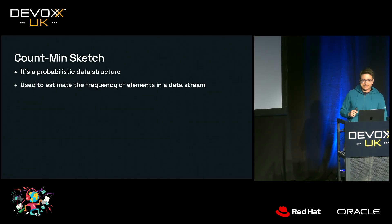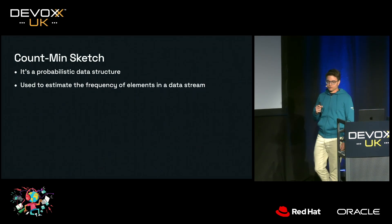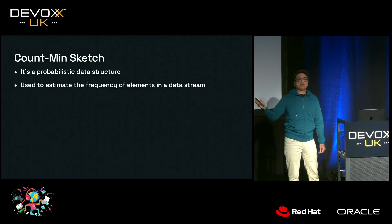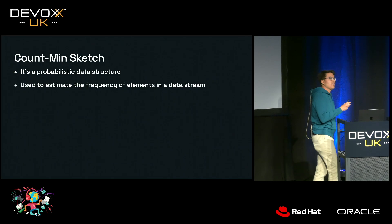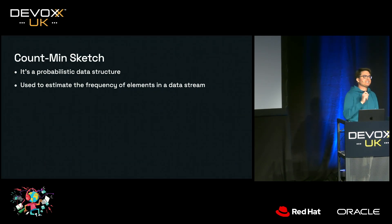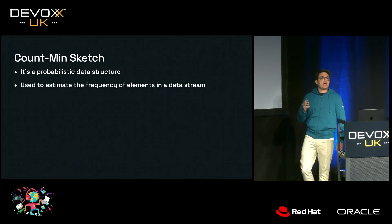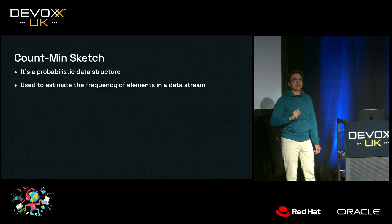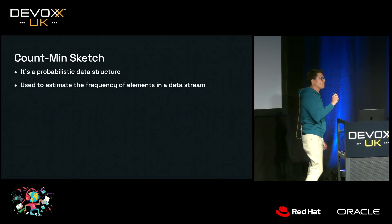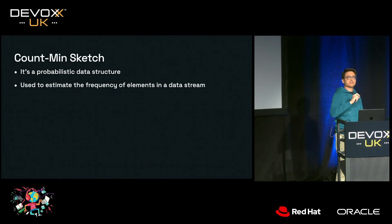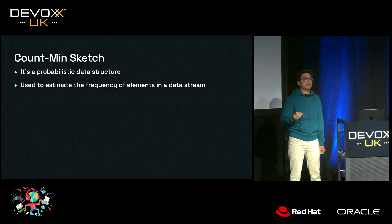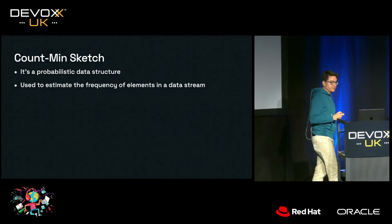That's not the case with probabilistic data structures. With Count-Min Sketch, which is used for estimating the frequency of elements or terms in a data stream, if you ask how many times an element was mentioned in the past minute, it might return that it's probably been mentioned 50 times — but it cannot be sure whether it was 50 times or 45 times. It's probably 50 times.